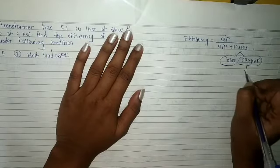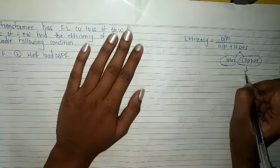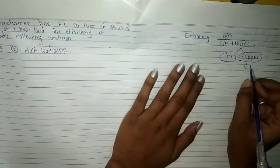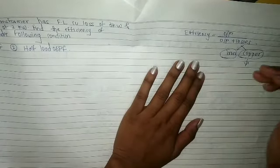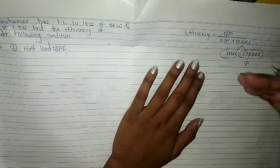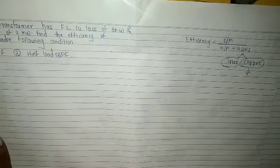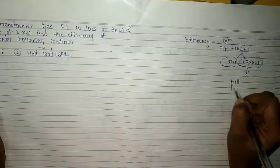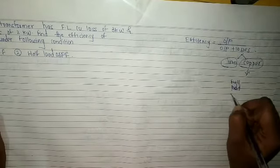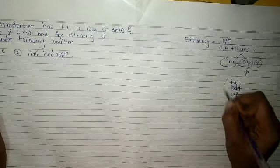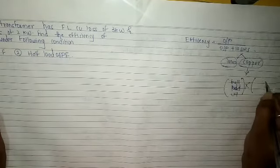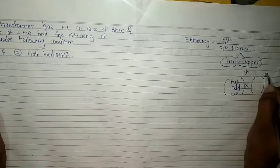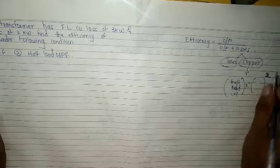How does copper loss vary? If they have asked us to find the copper loss for half load, as the load changes, our copper loss also changes. The formula is: full load copper loss multiplied by the square of the fraction of load at which we want to calculate. We will see this in the numericals.